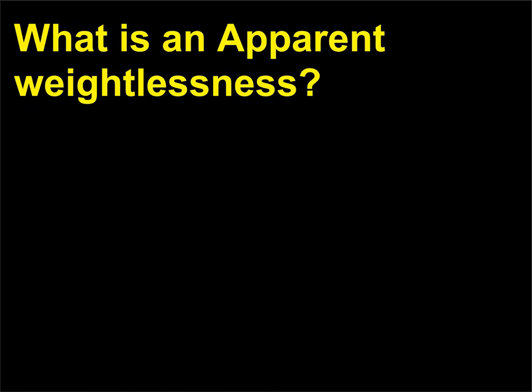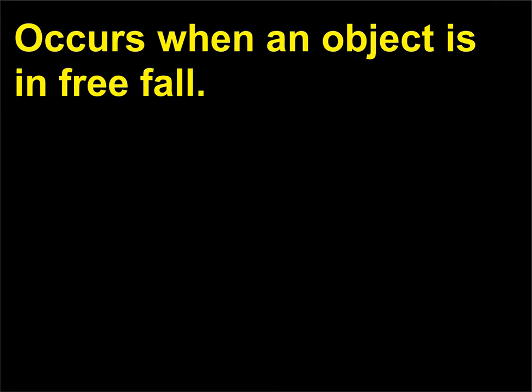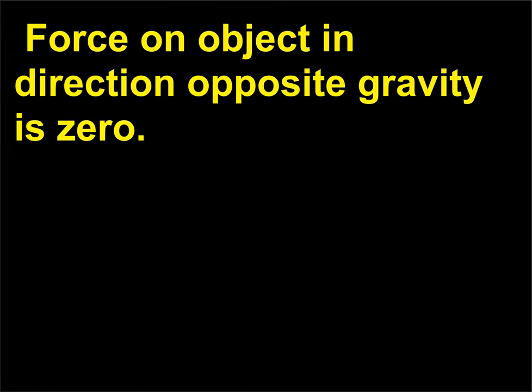What is apparent weightlessness? It occurs when an object is in free fall. The force on the object in the direction opposite to gravity is zero.